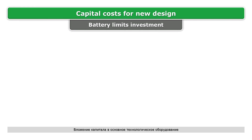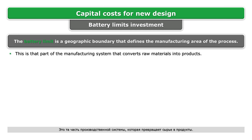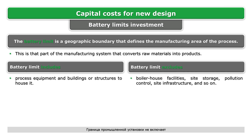The battery limit is a geographic boundary that defines the manufacturing area of the process. This is the part of the manufacturing system that converts raw materials into products. The battery limit includes process equipment and buildings or structures to house it. The battery limit excludes boiler house facilities, site storage, pollution control, site infrastructure, and so on.